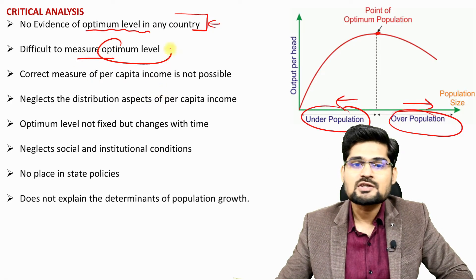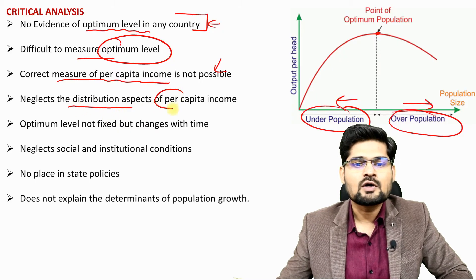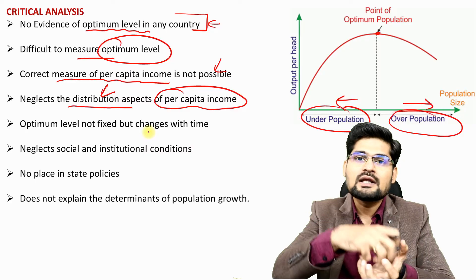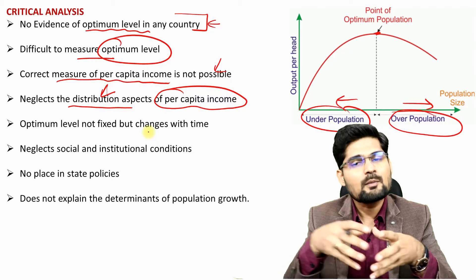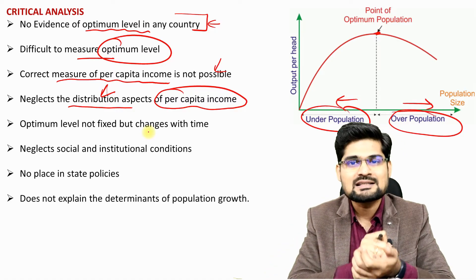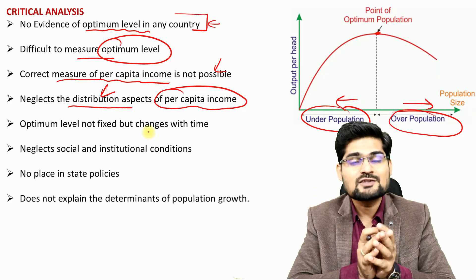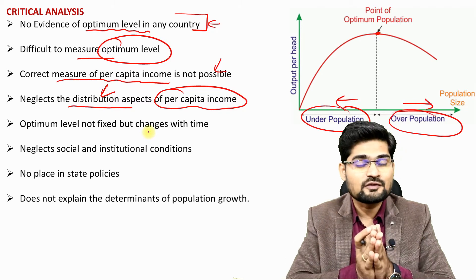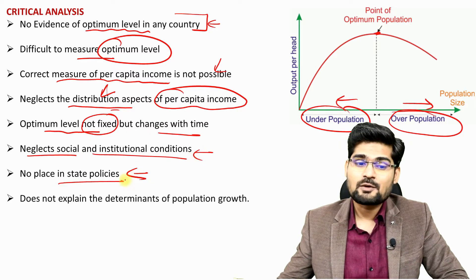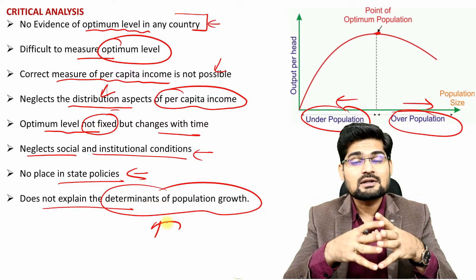The theory also neglects the distribution aspects of per capita income. If wealth is concentrated in few hands, per capita income may appear healthy while poverty on the ground remains high — people may be poor even when per capita income looks good. Further criticisms include: the optimum level is not fixed but changes over time, it neglects social and institutional conditions, has no place in state policies, and does not explain the determinants of population growth. Nevertheless, it remains an important reference frame for understanding under and overpopulation.